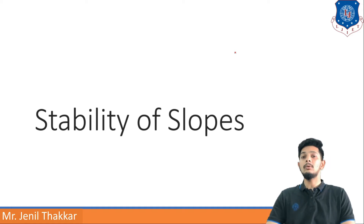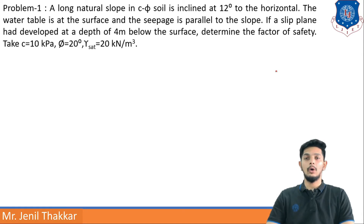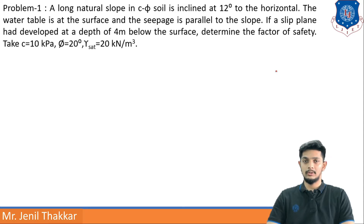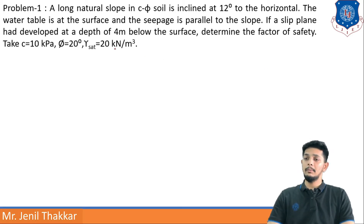Problem 1: A long natural slope in c-φ soil is inclined at 12 degrees to the horizontal. c-φ soil means c (cohesion) and φ (angle of internal friction), so it is a mixture of cohesive soil and cohesionless soil. The inclination angle is 12 degrees. The water table is at the surface and the seepage is parallel to the slope.